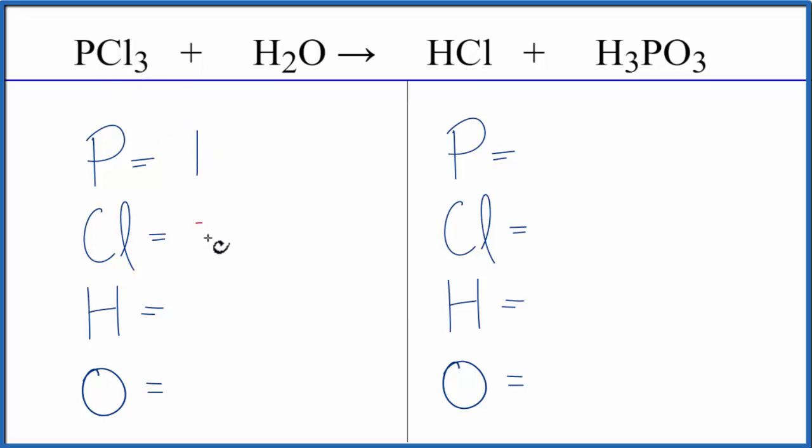We have one phosphorus, three chlorines, two hydrogens, and just the one oxygen.